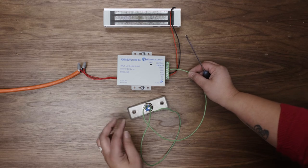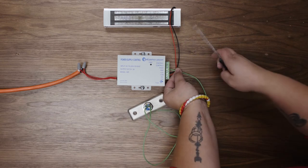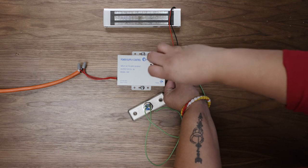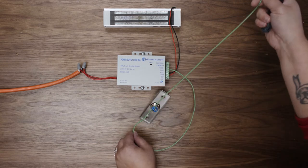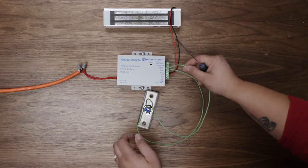Connect the first wire from the pushbutton to the ground terminal on the power supply. Then connect the second wire to the push terminal.